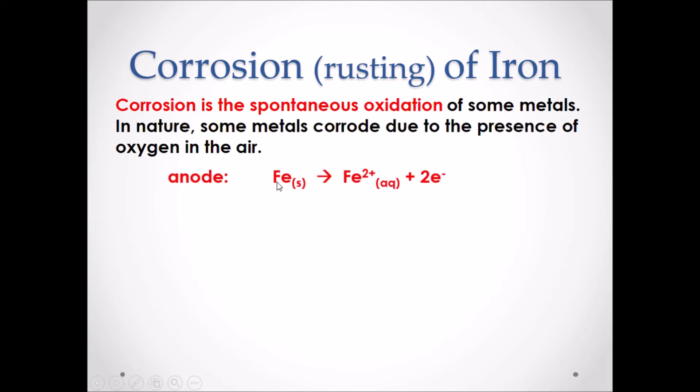First, we have the oxidation half reaction. Solid iron is broken down into Fe2+ and two electrons. Since this is oxidation, we can consider Fe solid as the anode.